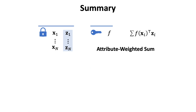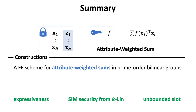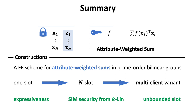Let me summarize this talk. In this work, we study functional encryption for attribute weighted sum. We give a construction in the prime order bilinear group with simulation-based security. A key feature is the unbounded slot property, which requires that a secret key can be used to decrypt the ciphertext for any n. We sketched how to get a one-slot scheme as basis and bootstrap this to the n-slot scheme. We can also adapt our n-slot scheme to the multi-client setting, where each xi and zi is encrypted by different parties, and the corruption of parties is also considered.